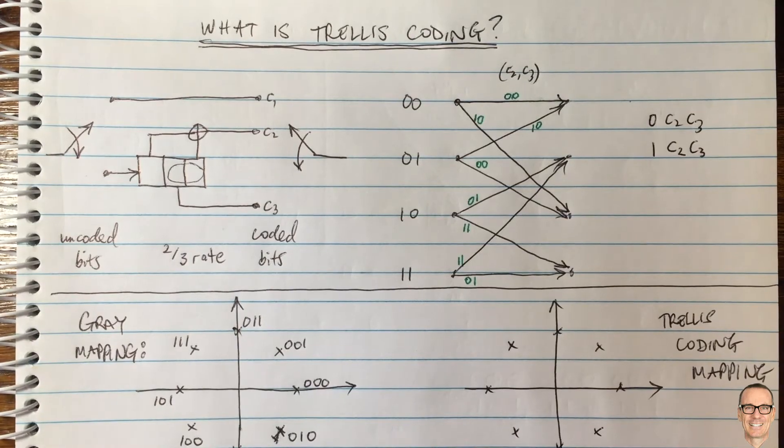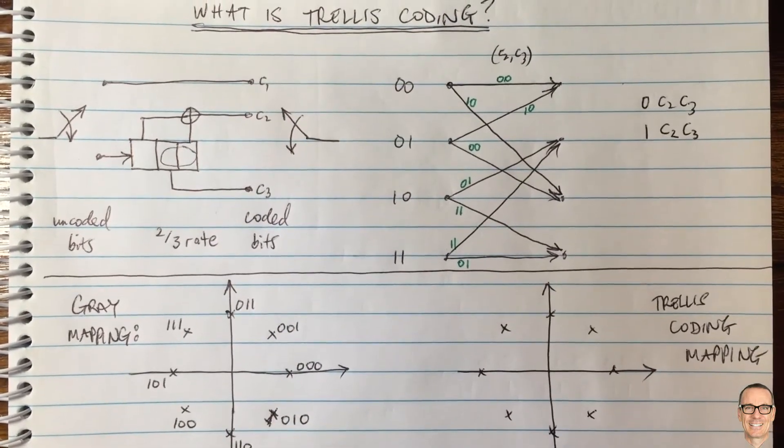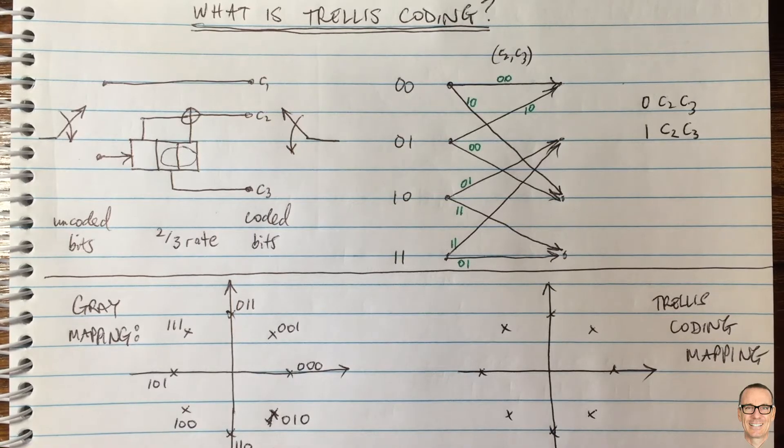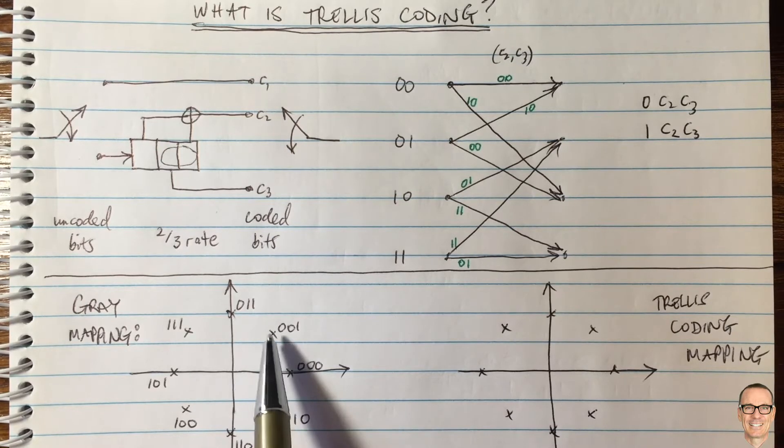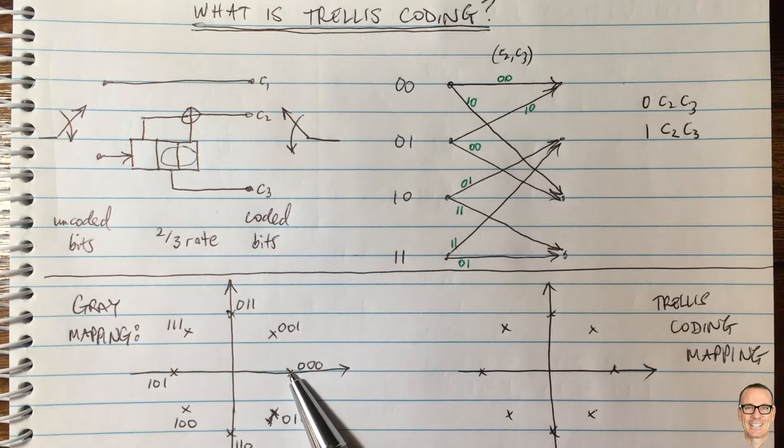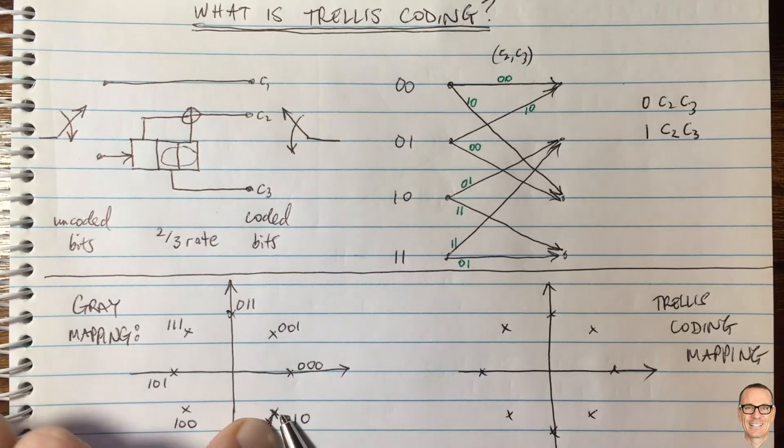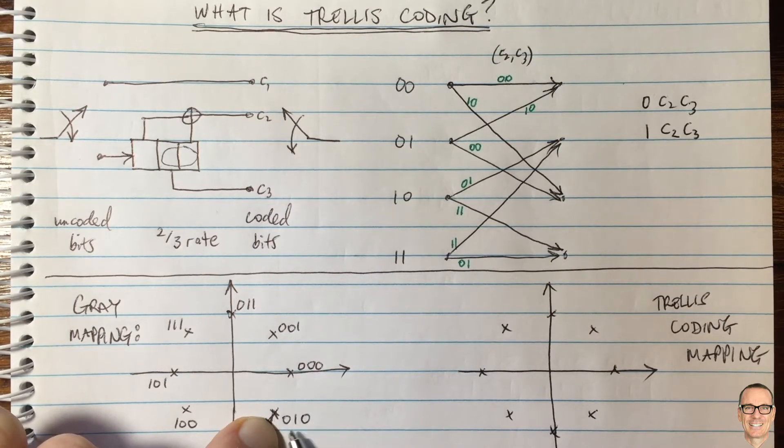So let's first look at the standard gray mapping. This would be how you would map the bits to the constellation points if you were simply doing standard gray mapping. And if you remember, and there's a link to a video below, gray mapping is where each of the constellation points that is near to each other only differs by one data, one in the data. So because if you're at this one, if this one was really sent, the most likely mistake or the most likely error would be to decode a symbol that neighbors this symbol. So it would be either this one or this one. And if you've mapped this to 001 and this one to 010, then if you made those symbol errors, you'd only be making one bit error out of the three bits. So the bit error rate would only be one third of the symbol error rate.